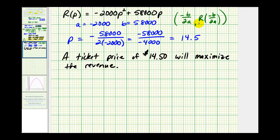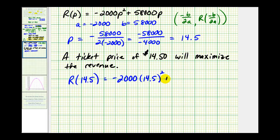To determine the maximum revenue, we evaluate the revenue function when P equals 14.5. So we have negative 2,000 times 14.5 squared, plus 58,000 times 14.5. This comes out to $420,500, which means the maximum revenue from ticket sales is $420,500.